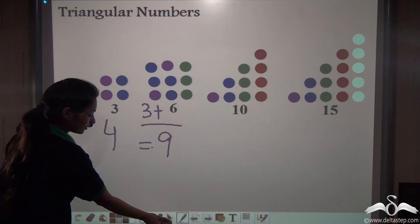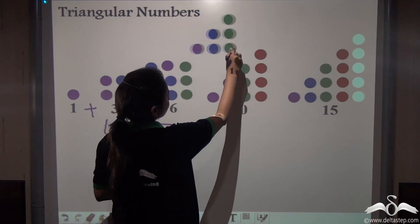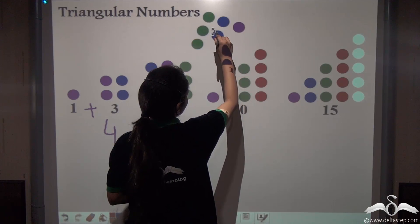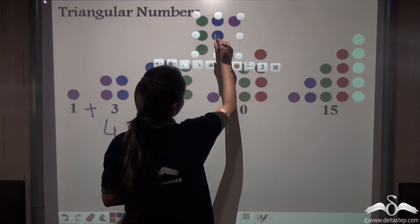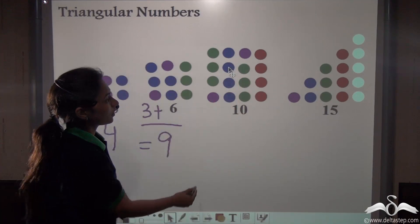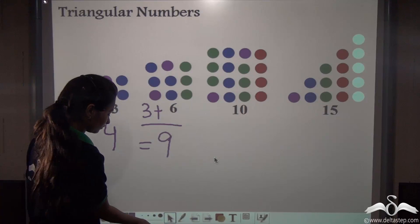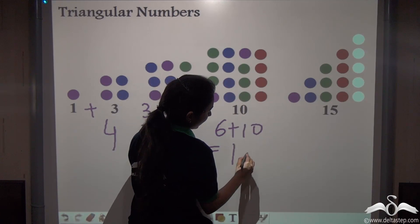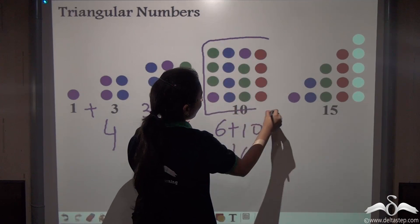Now, again, let us check the other ones also. Rotate this again. See, what do you get? Again, a perfect square. So, adding six with ten gives me sixteen. That is a perfect square of four.